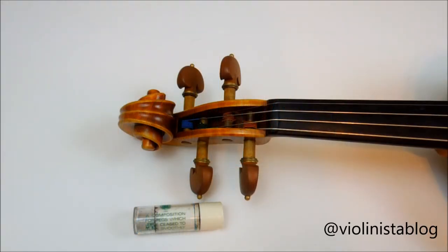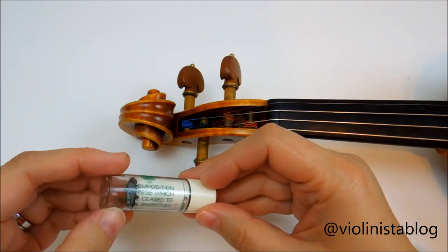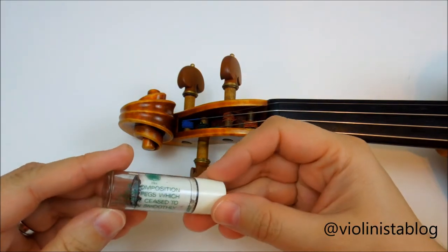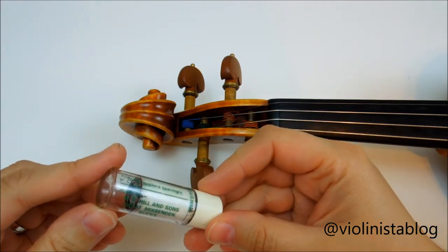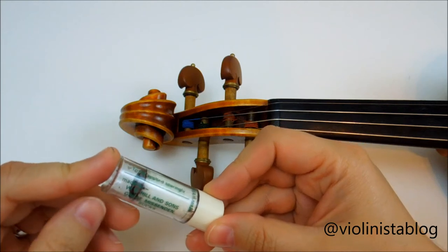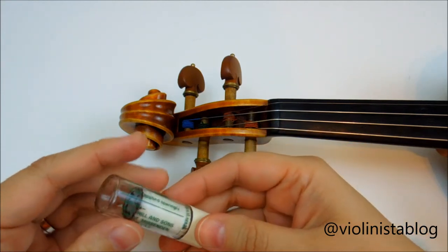Today I want to talk about how I take care of my violin pegs. Every time I change strings, I use a composition for pegs. This is the one made by Hill & Sons. It's very popular and you can get it in any major music store.